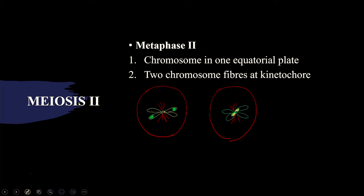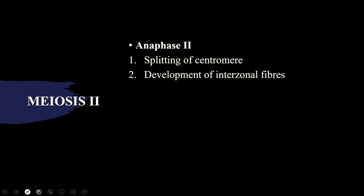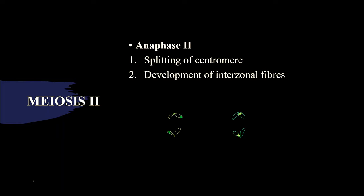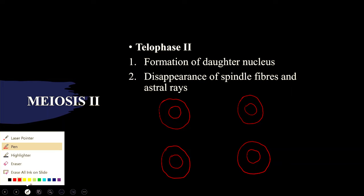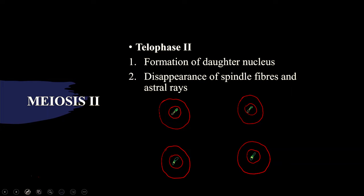Coming to anaphase II, the chromosomes get separated and there will be development of interzonal fibers between the two chromosomes. In telophase II, all chromosomes will get separated forming new cells, along with the formation of nuclear membrane. Finally we got four haploid cells — one, two, three, and four. This is all about telophase II.